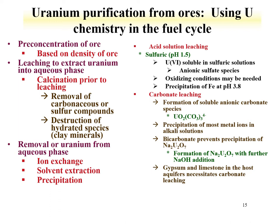In systems such as limestone with high acid-buffering capacity, carbonate leaching can be used. With carbonate solutions, one forms the anionic uranyl carbonate species. Under these conditions, most other metal ions will precipitate, achieving a rapid separation of uranium in solution from other metals in the solid phase. Use of bicarbonates prevents precipitation of sodium diuranate. This approach is primarily used for gypsum and limestone host systems, since adding acid would preferentially dissolve these.